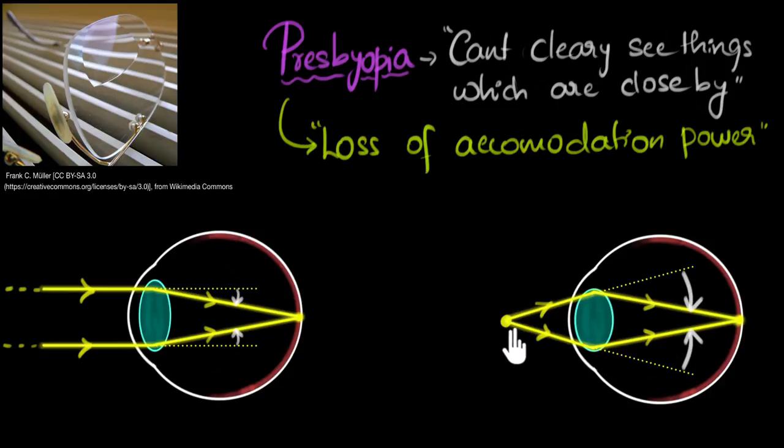So the cause for presbyopia is the loss of accommodation power. On the other hand, if you're dealing with hypermetropia, or even myopia for that matter, that is not due to accommodation. There, accommodation, it has nothing to do with accommodation. Those conditions are due to abnormal shape of the eyeball itself, or the abnormal shape of the eye lens. And we've spoken about this in great detail in a previous video. So if you need more clarity on that, then it'll be a great idea to go back and watch that video and come back over here.